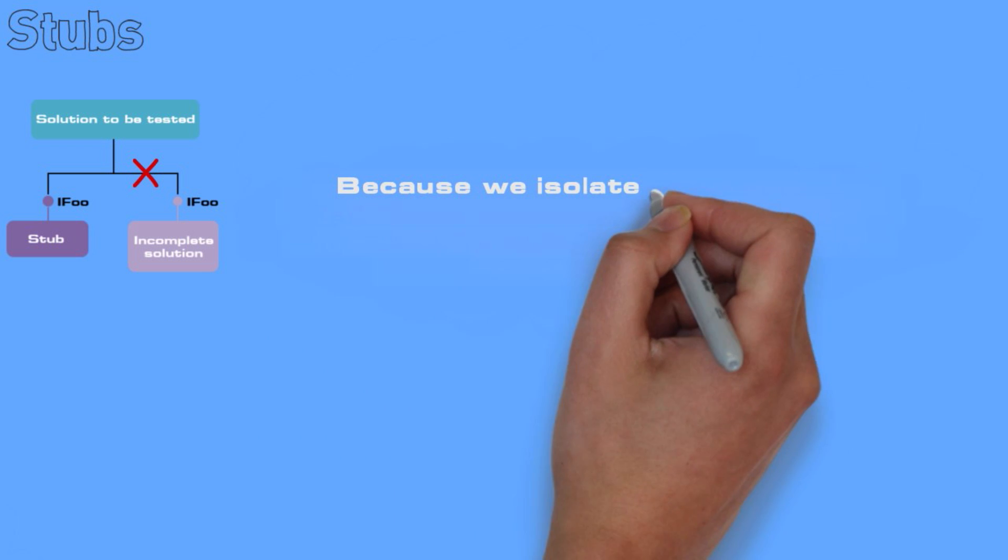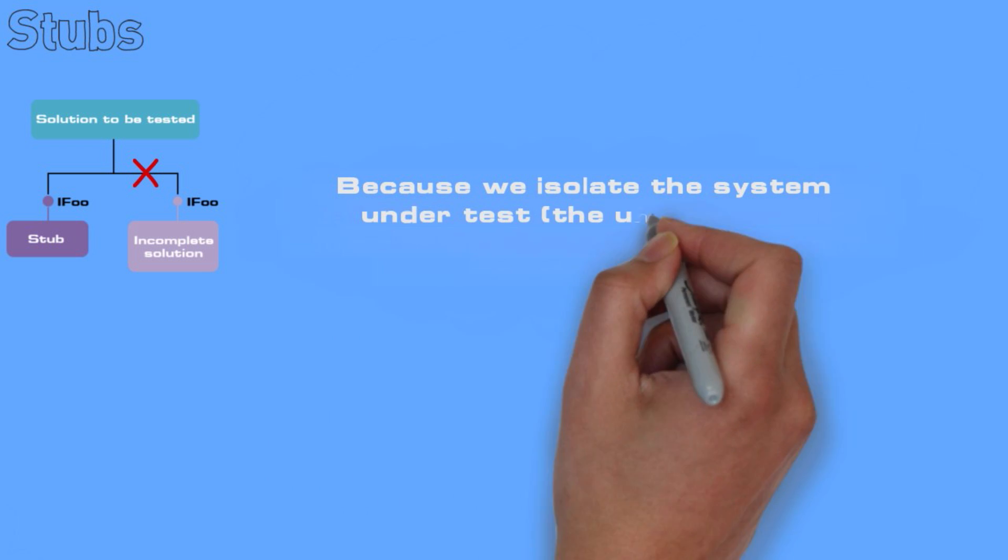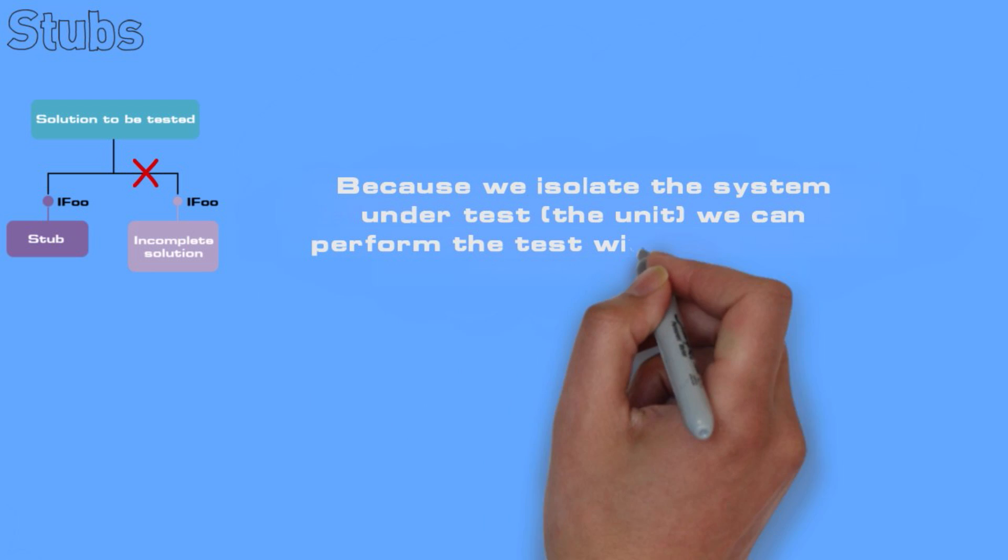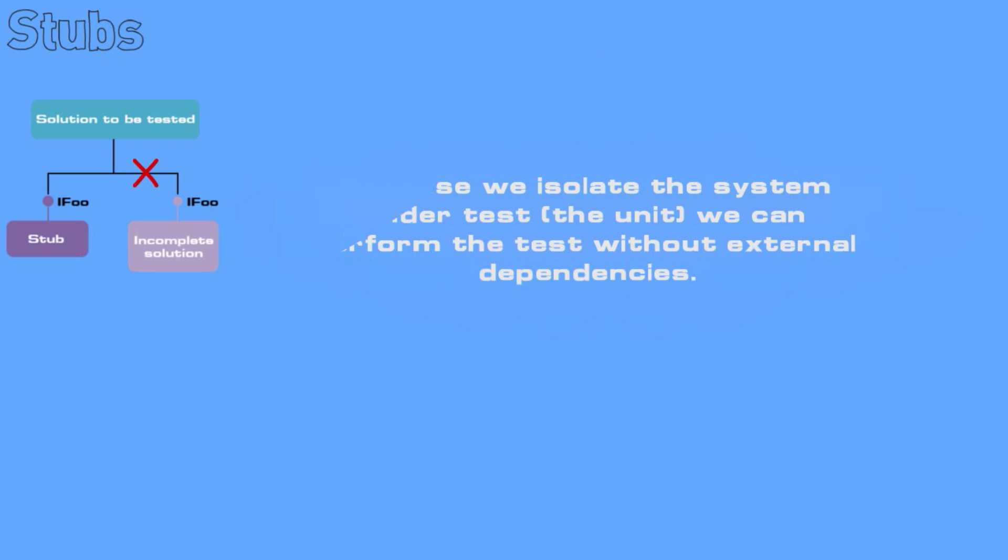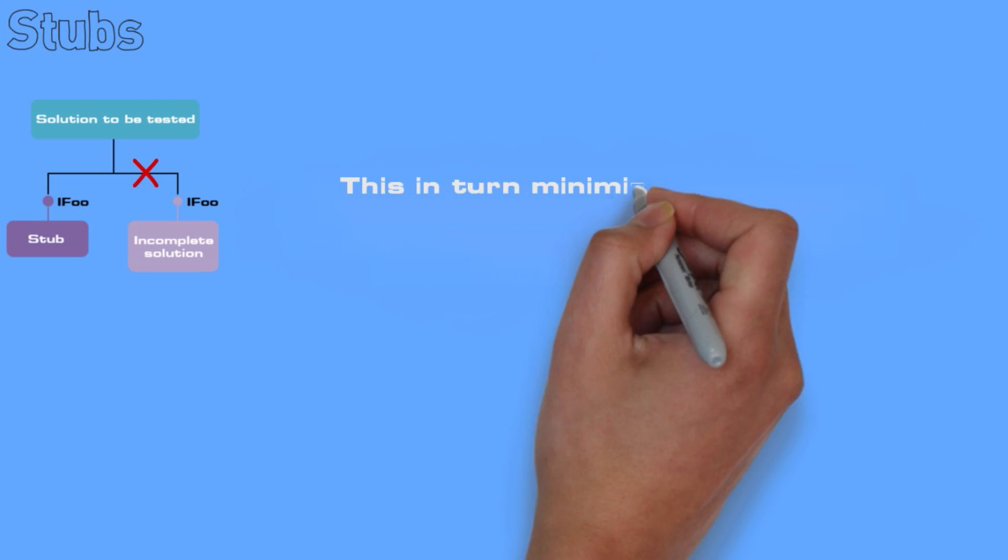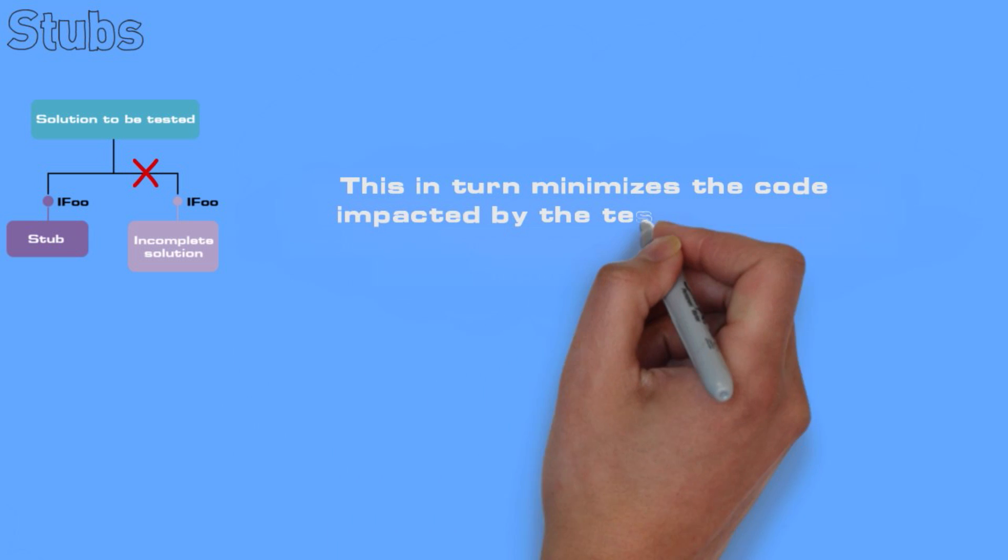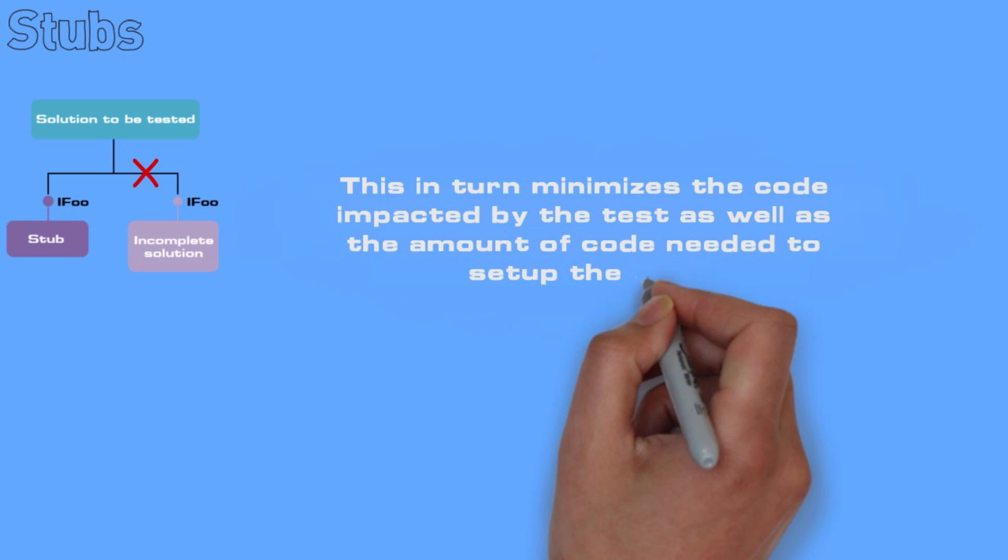Because we isolate the system under test, the unit, we can perform the test without external dependencies. This in turn minimizes the code impacted by the test as well as the amount of code needed to set up the test.